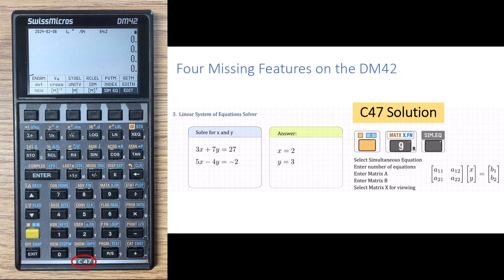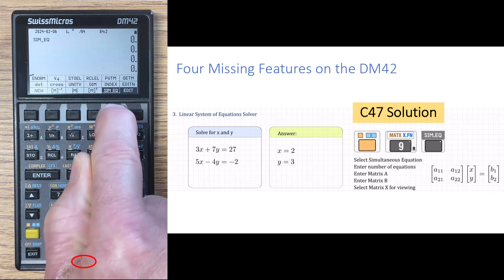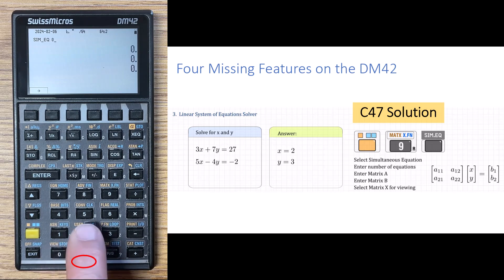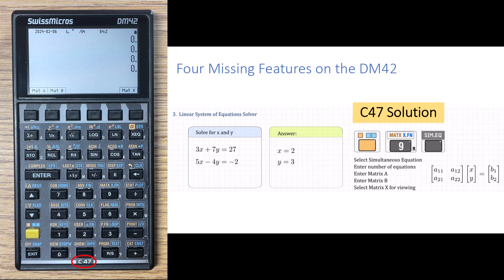So to solve a simultaneous system of linear equations, we go to the matrix function. So shift 9, and on the F5 key, we select simultaneous equations. First thing we have to do is enter the number of equations, and you have to enter the leading zero. In this case, there's two equations, so 0, 2.